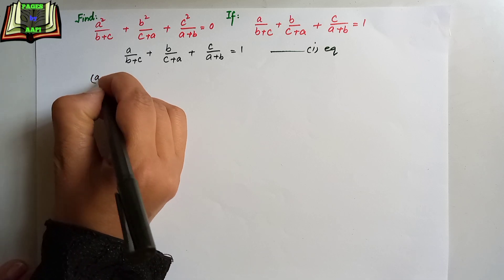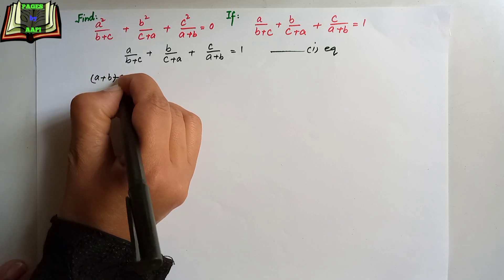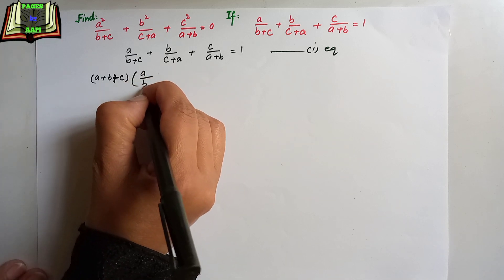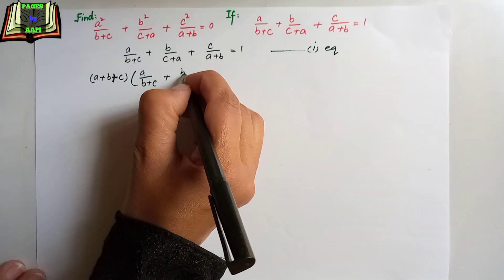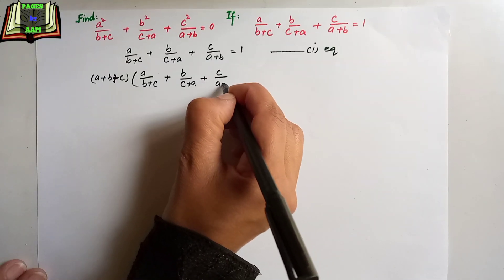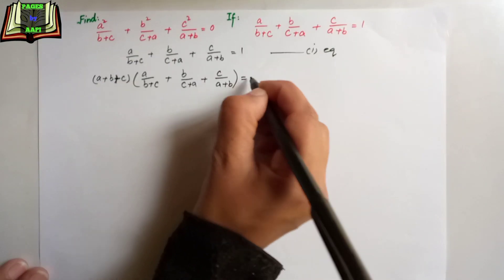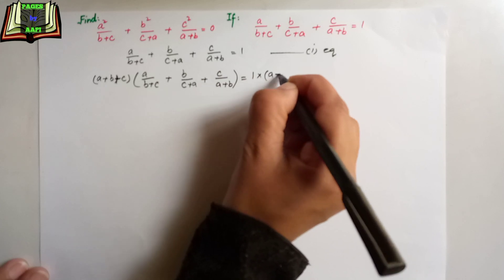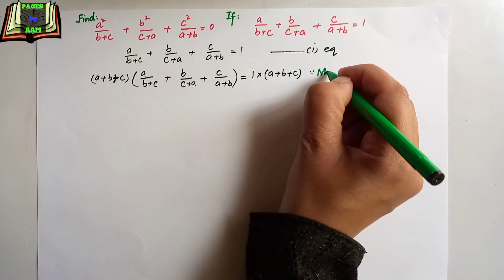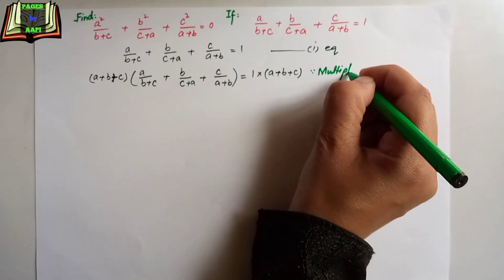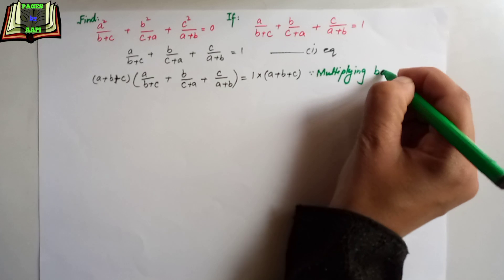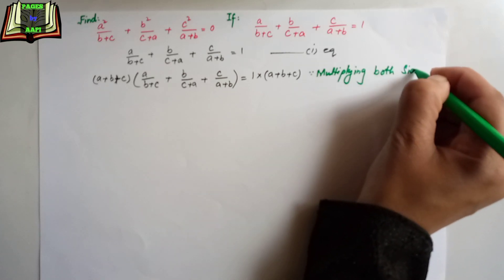We will multiply equation 1 by (a+b+c) on both sides: a/(b+c) + b/(c+a) + c/(a+b) = 1 × (a+b+c). What we did here is multiply both sides by (a+b+c).